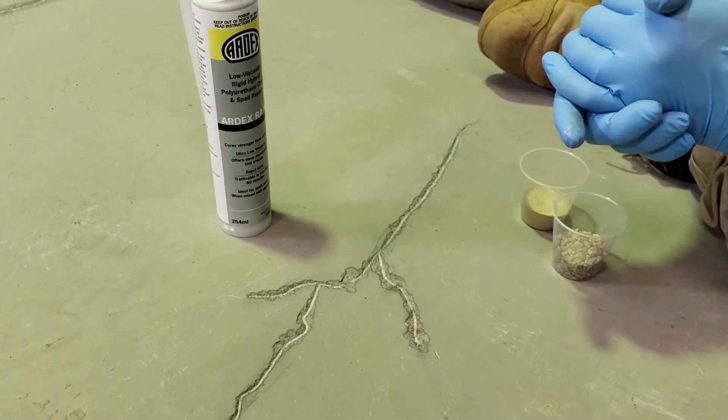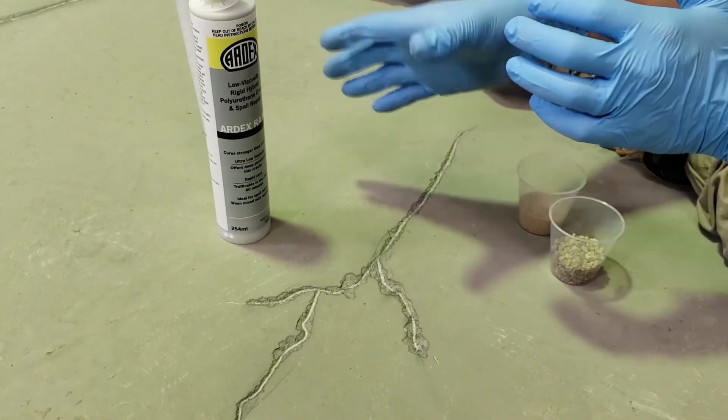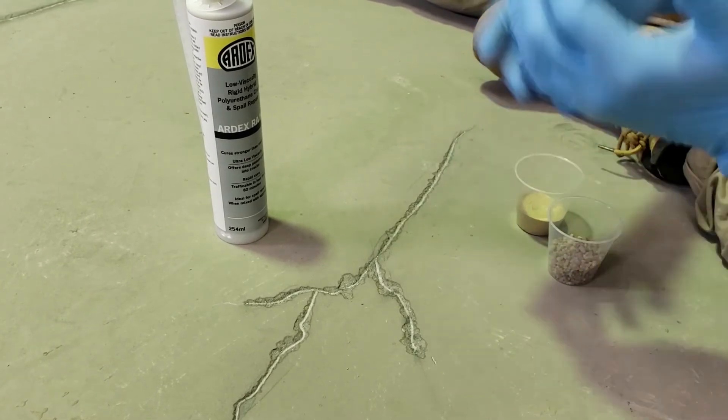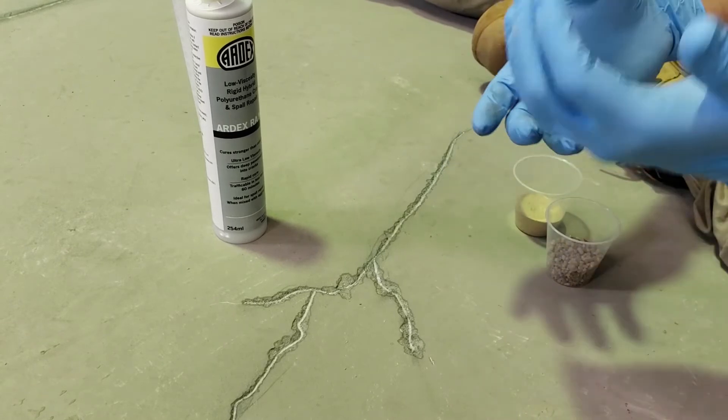Now one thing you've got to make sure of, if you are filling in cracks, especially with this type of product, you need to make sure that if you're dealing with a second story, third story, fourth story, commercial, whatever it may be, and you're trying to use this material, have a look underneath.